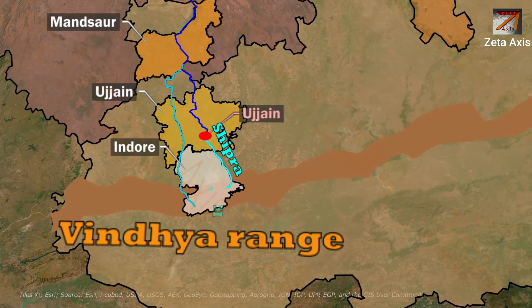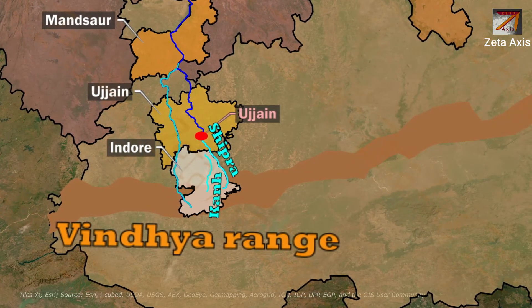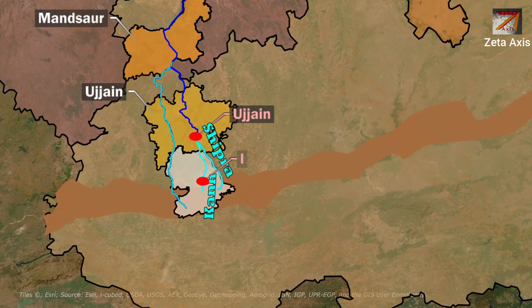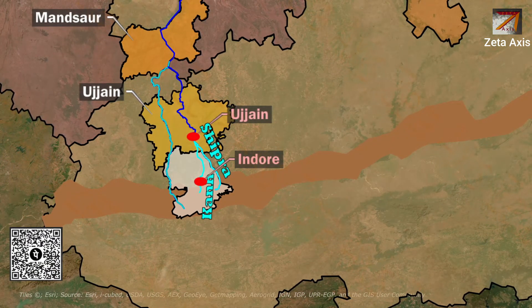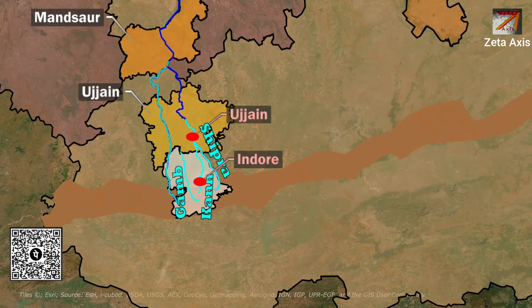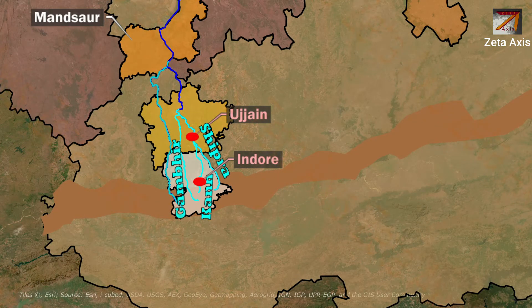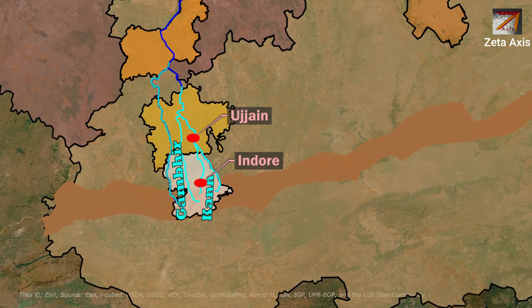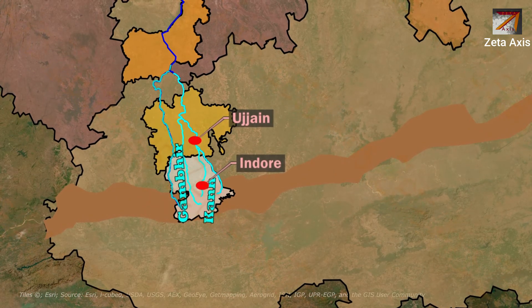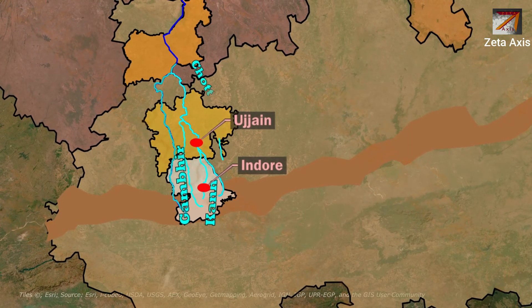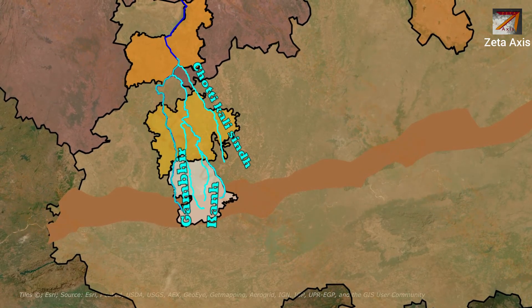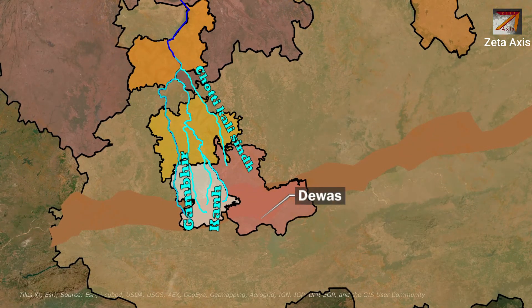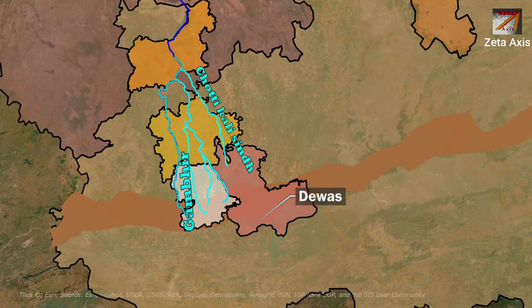Just before Ujjain, the Khan river joins the Sipra river. The Khan river also originates from Indore, and Indore city is located on its banks. Further, the Gambir river also originates from Indore district and joins the Sipra river after Ujjain. The Sipra river then moves forward to join the Chambal river in Mandsaur. In Mandsaur, the Chhoti Kali Sindh river also joins the Chambal river. The Chhoti Kali Sindh river originates from Dewas and is different from the Kali Sindh river.